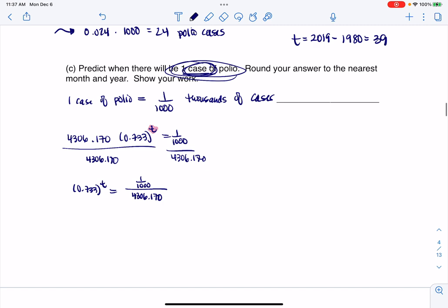We're going to get that 0.733 to the T is whatever this number is, one over a thousand divided by 4306.170. Since I have my exponential expression isolated, I can log both sides now, and that's exactly what I'm going to do. I'm going to take the ln of both of these sides. What that allows me to do is bring this exponent down as multiplication.